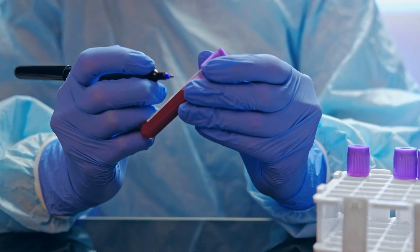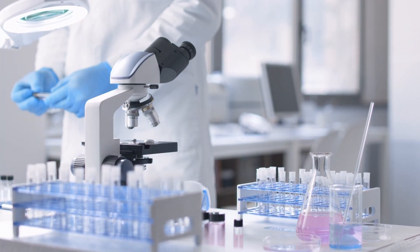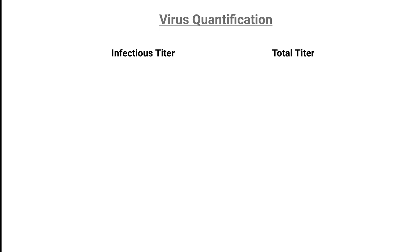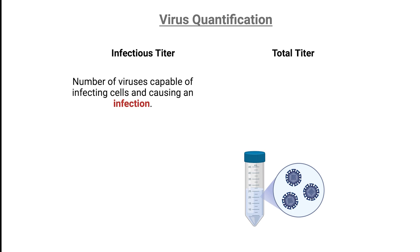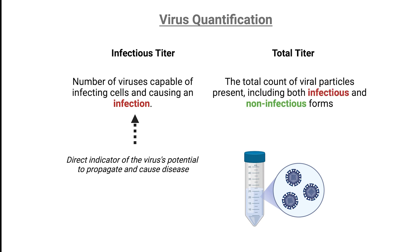When studying viruses, it's vital to assess not only how many viral particles are present, but also how many of them are capable of causing an infection. This distinction is made through two primary measurements. Infectious titer refers to the number of viruses capable of infecting cells and causing an infection — it's a direct indicator of the virus's potential to propagate and cause disease. Total virus titer accounts for all viral particles present, whether they're infectious or not, providing a comprehensive overview of the viral load, encompassing both active and inactive forms.